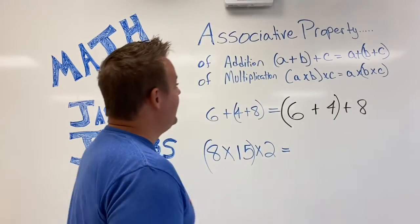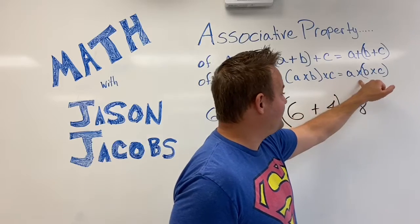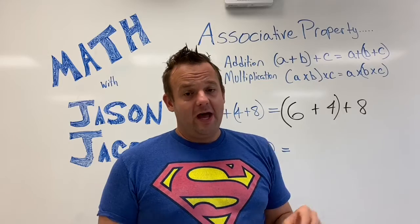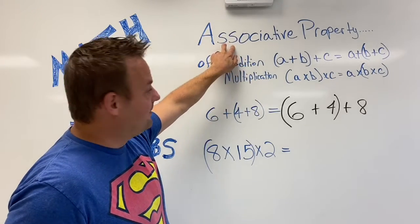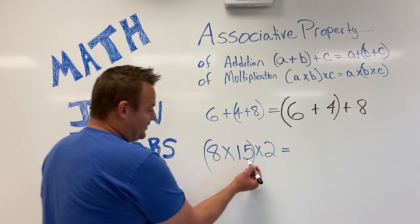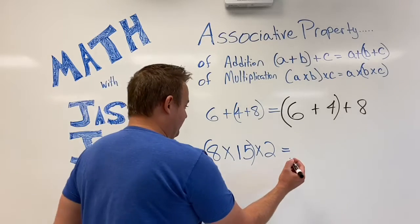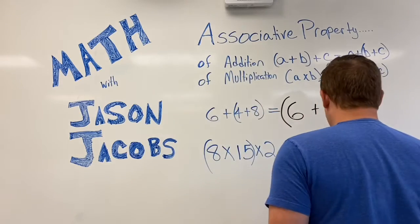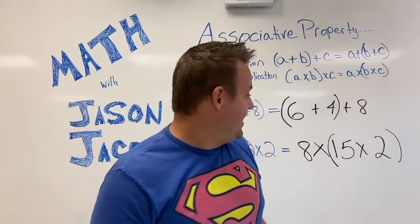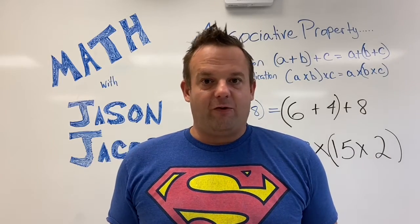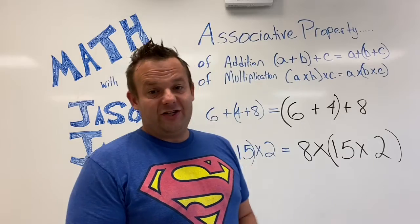Now for the Associative Property of Multiplication. It says: as long as it's all multiplication, the quantity A times B, times C, equals A times the quantity B times C. Notice how the factors A, B, and C stay in the exact same order — the only thing that moves is the grouping symbols. That's the Associative Property. So eight times 15 times two — I can't really do that in my head. But if we move the grouping symbols because it's all multiplication, 15 times two is 30, and then 30 times eight — three times eight is 24, so 30 times eight is 240. That means this is 240, and this is also 240.